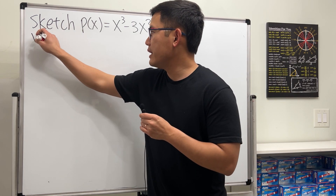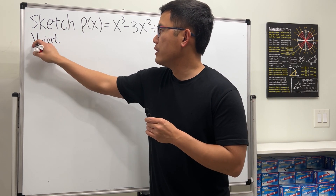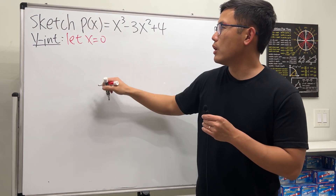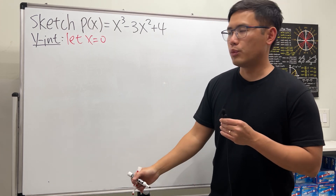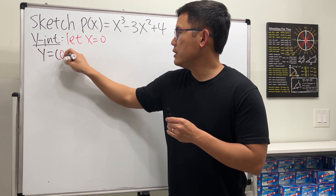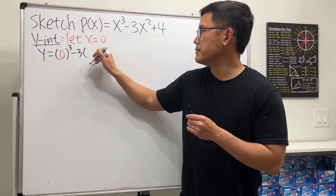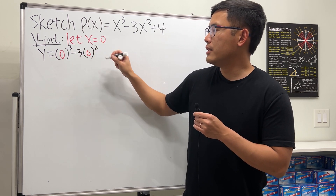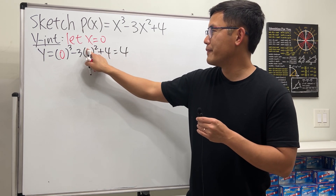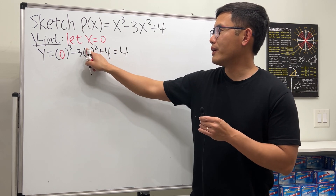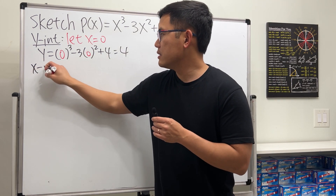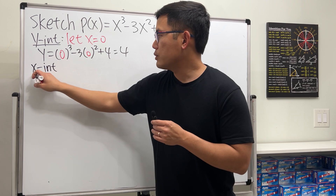Let's get started with the y-intercept. For this, we just let x equal zero and plug in — that gives us the y-intercept. P(0) = 0³ - 3(0)² + 4 = 4. So (0, 4) is the y-intercept.